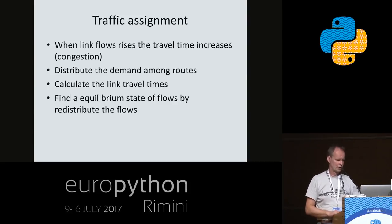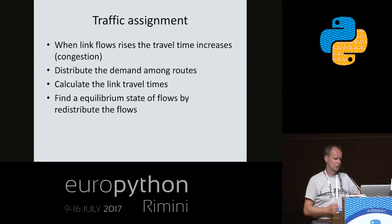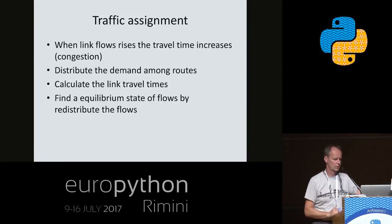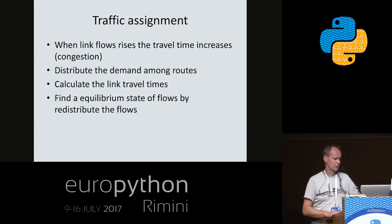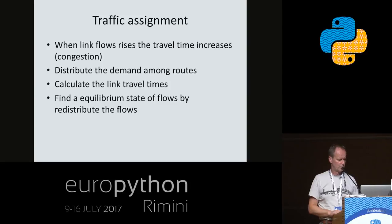If you notice congestion in traffic, you will ask yourself if there is an alternative route with less travel time. Our model should be able to distribute the demand across more routes so that links are not completely congested. It would also be nice if we had a way to calculate the travel times for congested links. So we need to have a function of travel time as a function of the amount of congestion, and then we should figure out a way to formulate an equilibrium to distribute the flows.